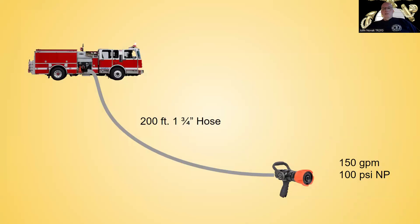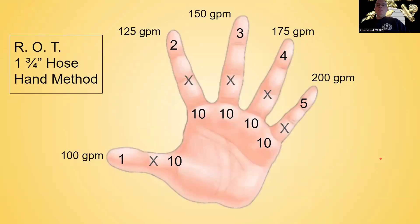So in this instance, I have 200 feet of hose, inch and three-quarter hose. We know the flow. The flow is 150 gallons a minute. My nozzle pressure is 100 PSI. So 150 GPM, three times 10 gives me 30. And there's two 30s. So my total friction loss is going to be 60.